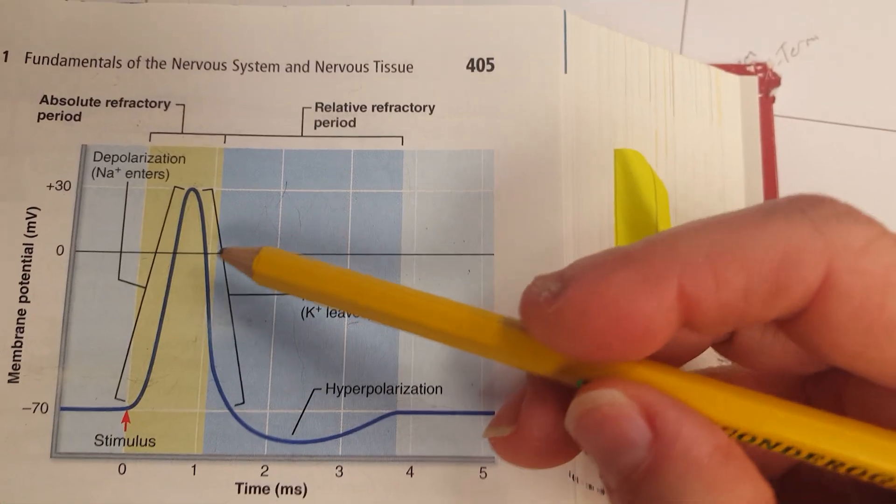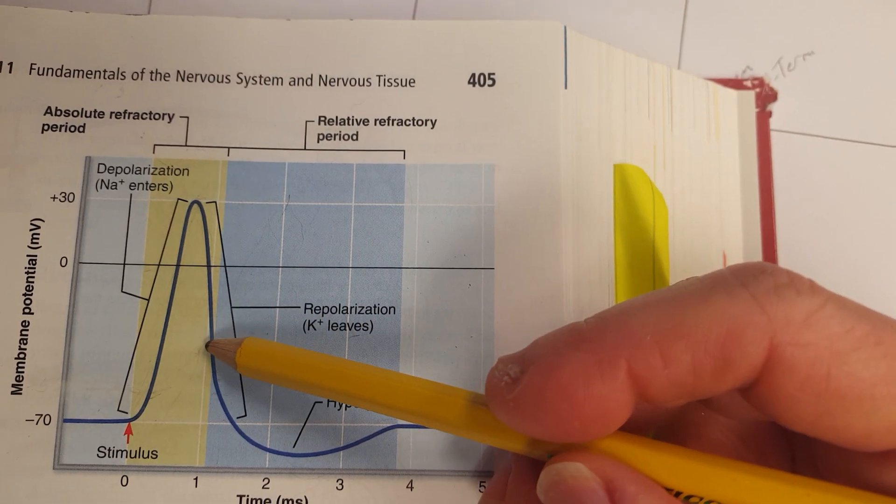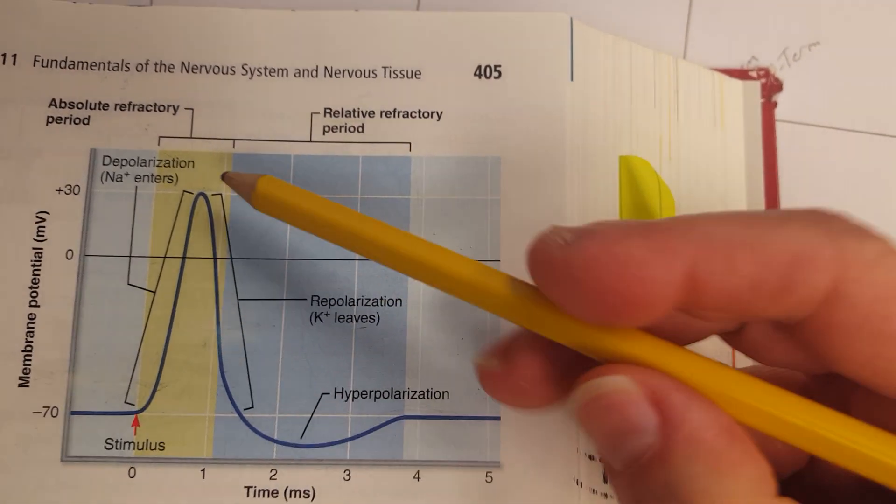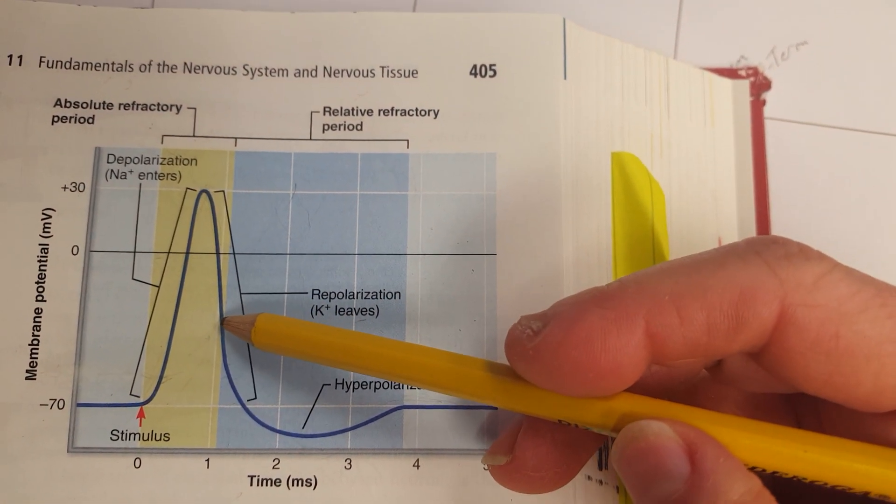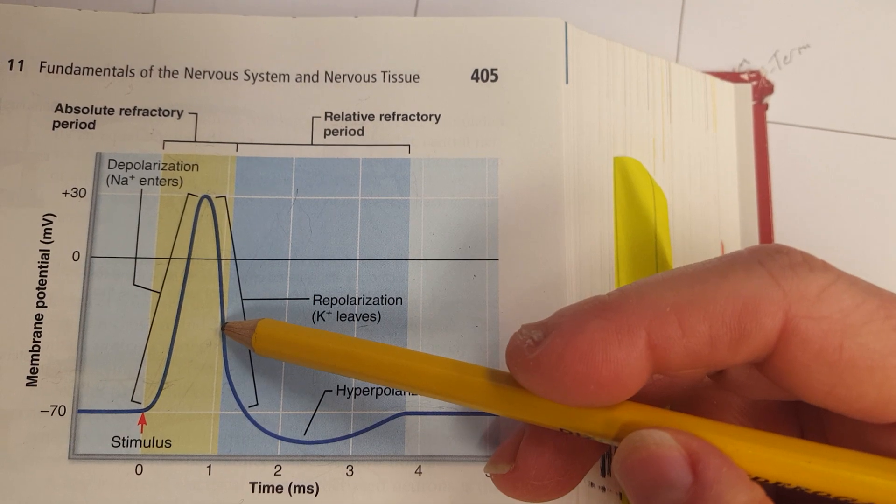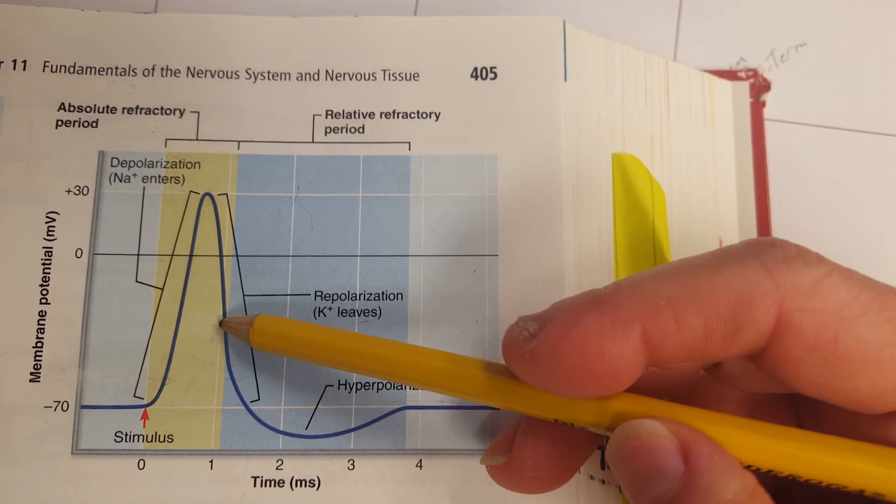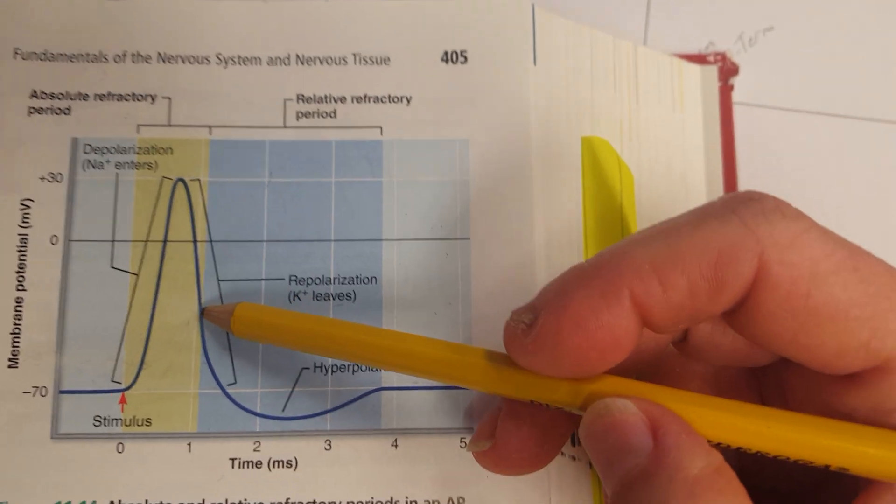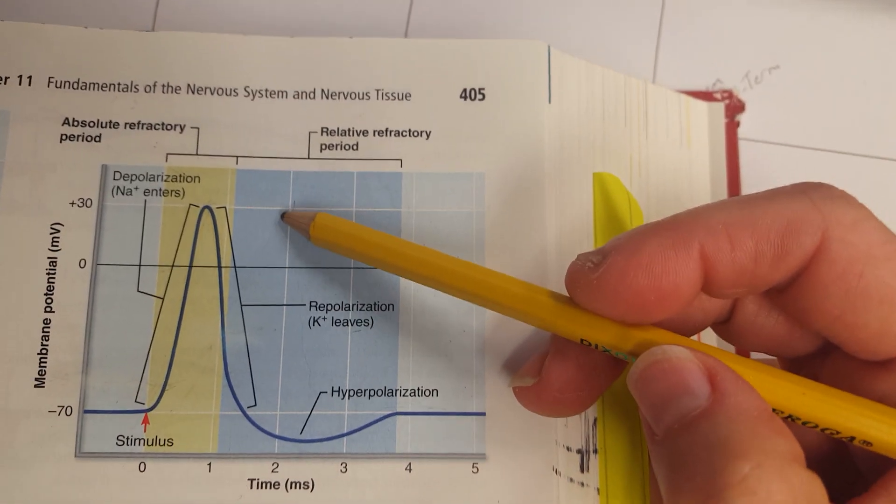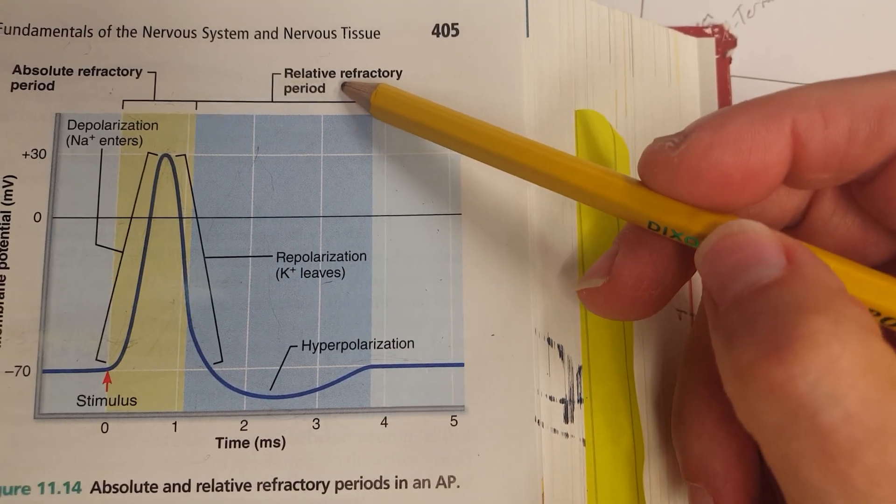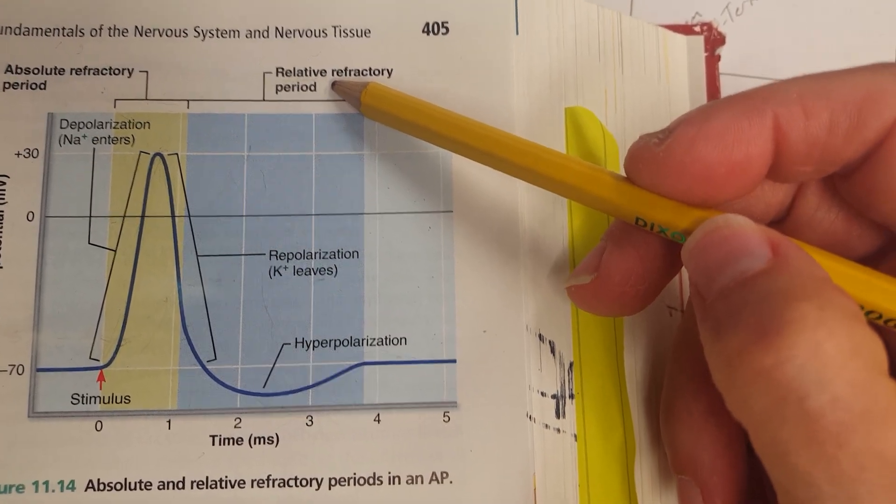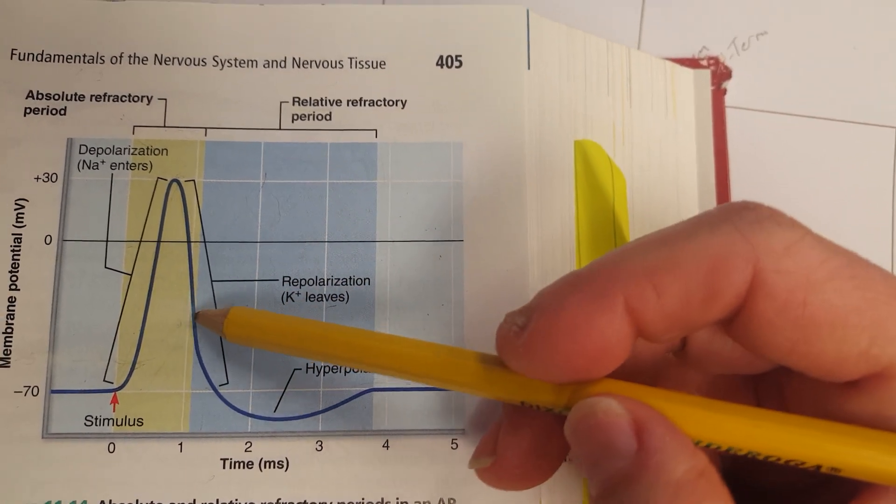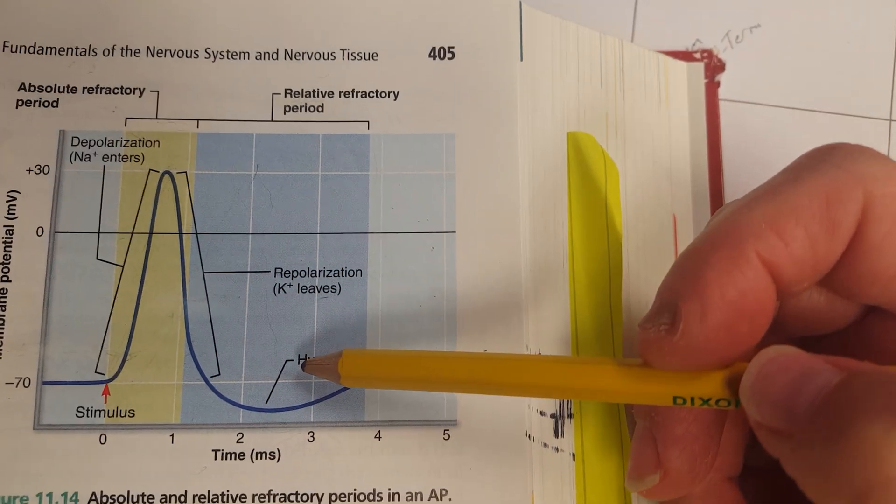However, once we have enough efflux of potassium, because remember potassium is inside the cell, so once enough potassium leaves and we get to a certain voltage on the membrane, if we have an above-threshold stimulus, we could potentially elicit another action potential relative to the strength of the stimulus being supra-threshold, above-threshold, where we can have another depolarization and repolarization phase.